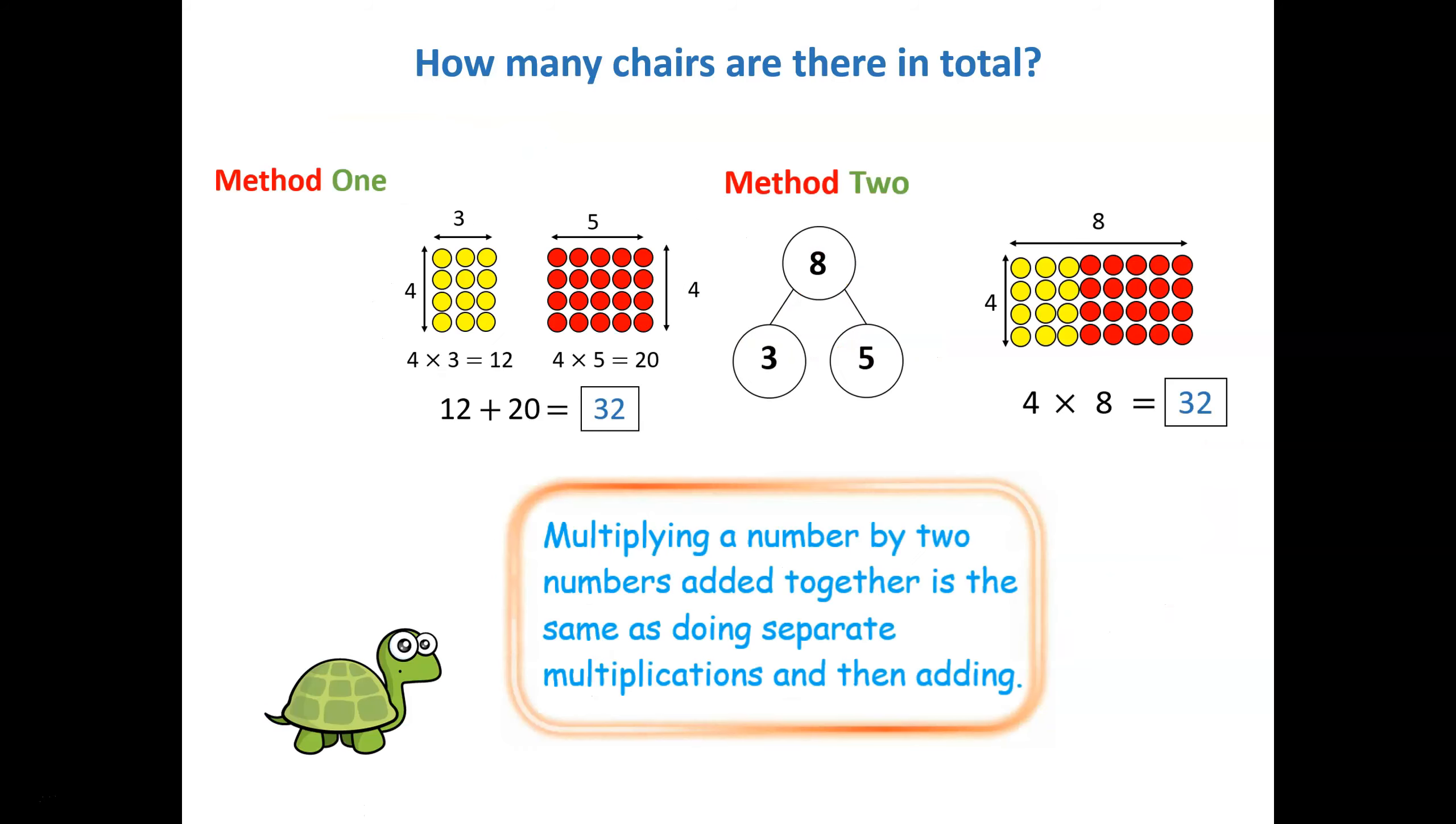We should take a moment to reflect on our discovery. These two methods show us that multiplying a number by two numbers added together is the same as doing separate multiplication and then adding.